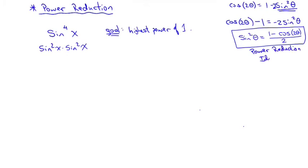The other power reduction formula: cosine squared θ equals (1 plus cosine 2θ) over 2. So if you need to power-reduce sine, use the one-minus formula; if you need to power-reduce cosine, use the one-plus formula.